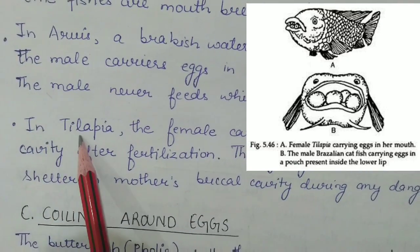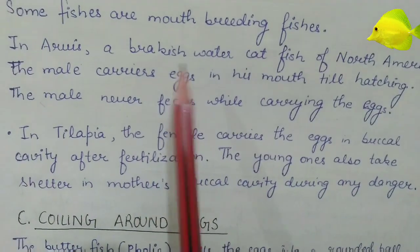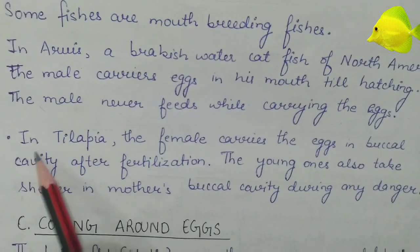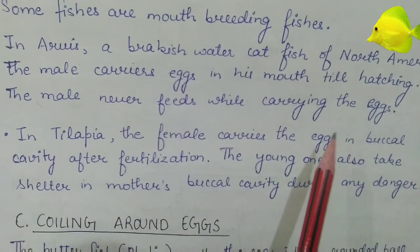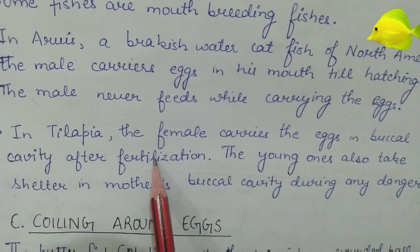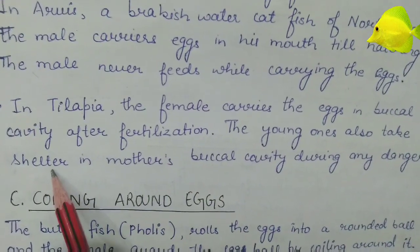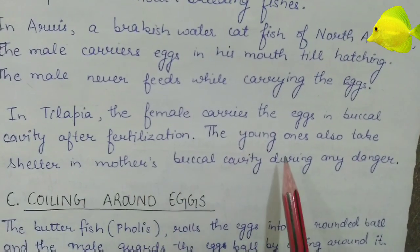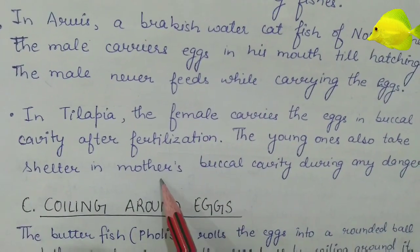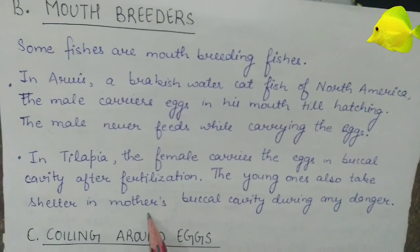The second example is tilapia. In tilapia, the female carries the eggs in the buccal cavity after fertilization. The young ones can also take shelter in the mother's buccal cavity during any danger. This is the example of mouth breeders in Pisces, and this is a form of parental care.